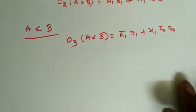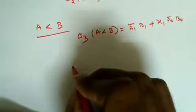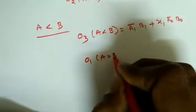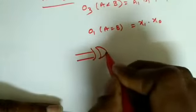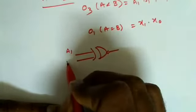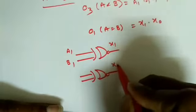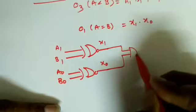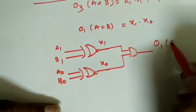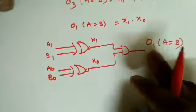Now how to implement these expressions. O1 (A equals B) = X1·X0. We use one XNOR gate for A1, B1 giving X1, and one XNOR gate for A0, B0 giving X0. Both X1 and X0 go to one AND gate which provides output O1 — A is equal to B. This is the logic diagram for O1.